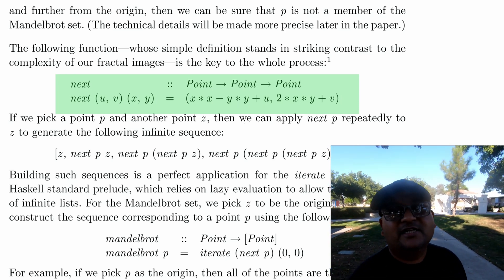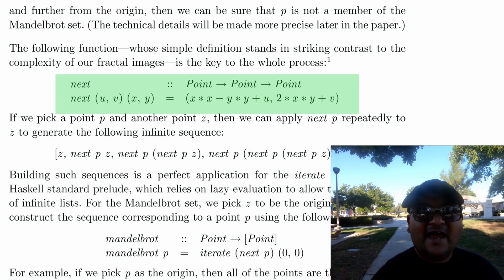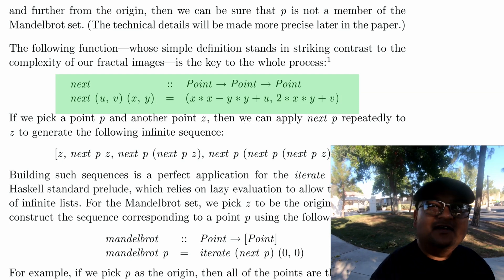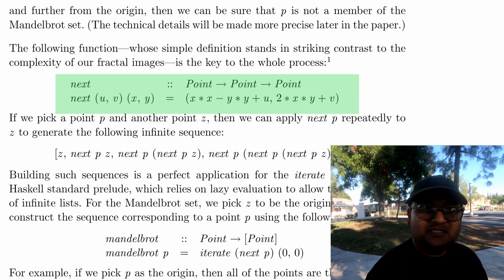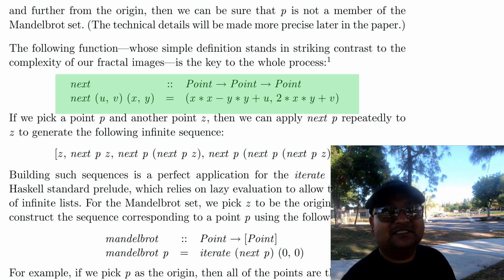You can express this pretty succinctly by writing out the function next, and then constructing a sequence of points that are formed by iterating this next function on a given point, keeping one of those points fixed.